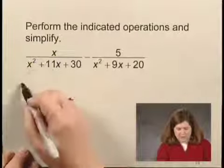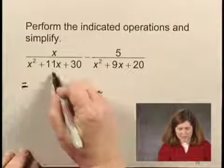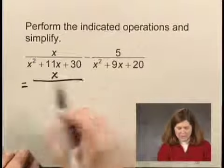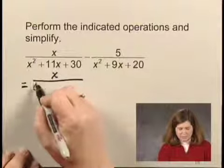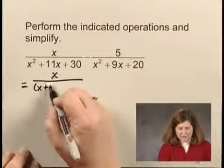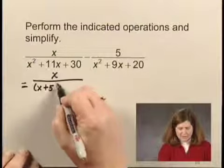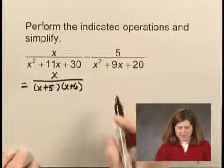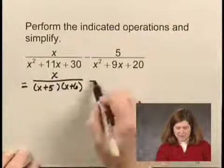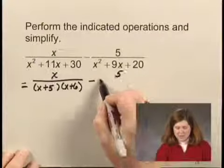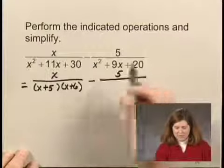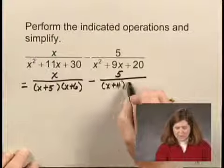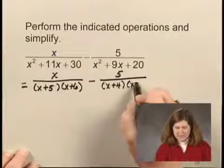Factoring the first denominator, we have x plus 5 times x plus 6. Factoring the second denominator, we have x plus 4 times x plus 5.